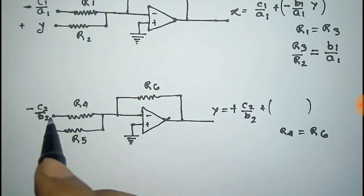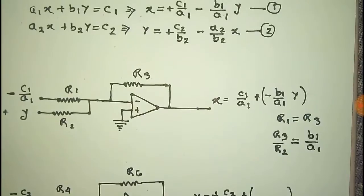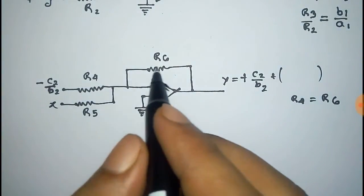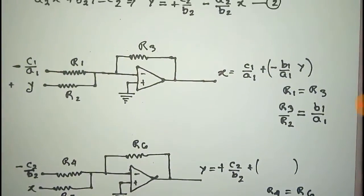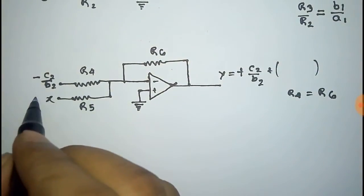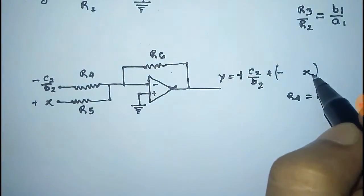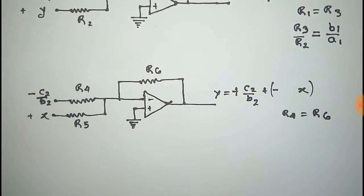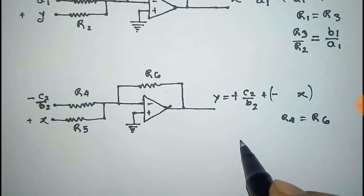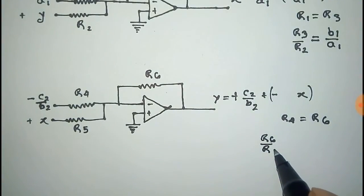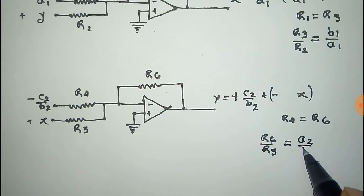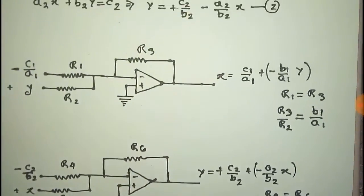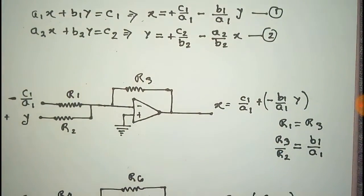For the second input, the variable in the second equation is x, so x is the input. The output term will be −(a2/b2)·x because there is a minus sign there. We give +x at the input and it becomes −(a2/b2)·x at the output. To multiply a2/b2 with x, we give the ratio r6/r5 = a2/b2. Thus we get the outputs for both equations.